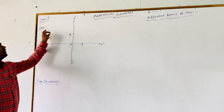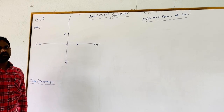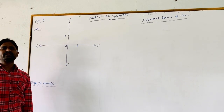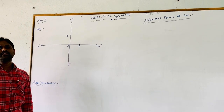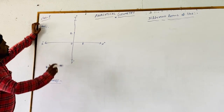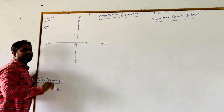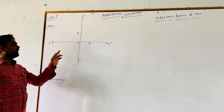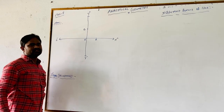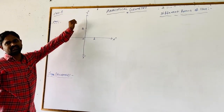Before that, we are indicating each and everything in the geometry on a plane. A plane is a flat surface which extends infinitely in all directions. We draw two mutually perpendicular lines on a plane which intersect at a point called the origin, and the two mutually perpendicular lines are the x and y axes.